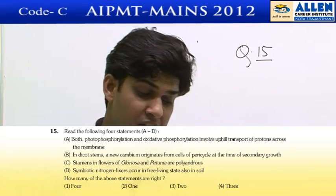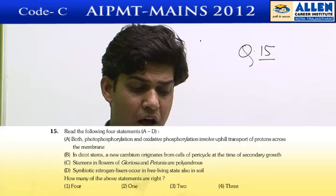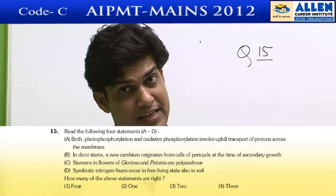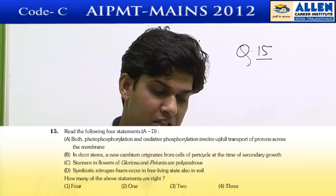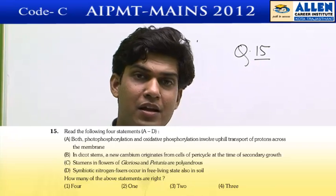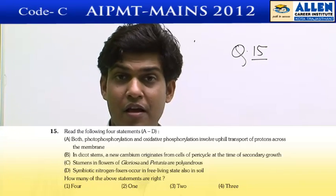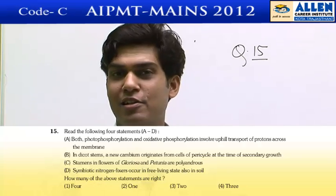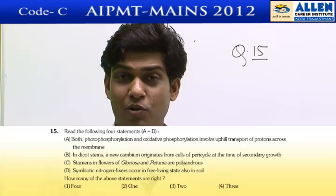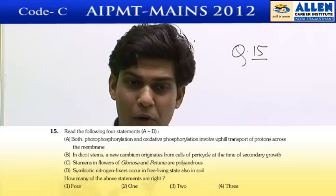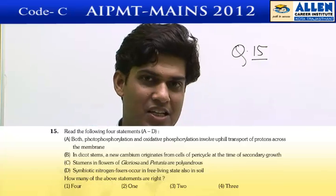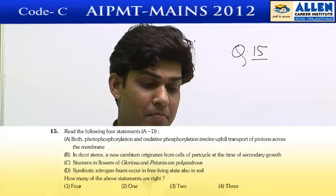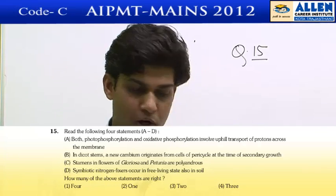Moving on: stamens in the flowers of Gloriosa and Petunia are polyandrous — yes. As we know, Gloriosa and Petunia do not show any cohesion among stamens, but they do show adhesion with the other floral whorls. However, the polyandrous condition is indeed present. So statement number C is also a correct one.